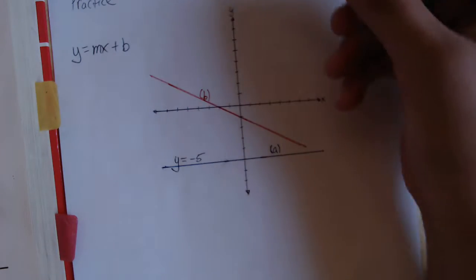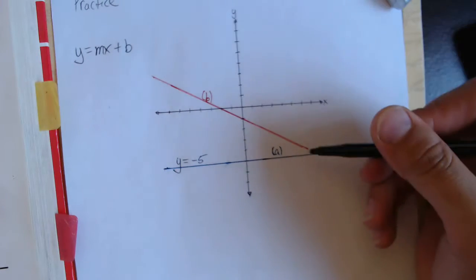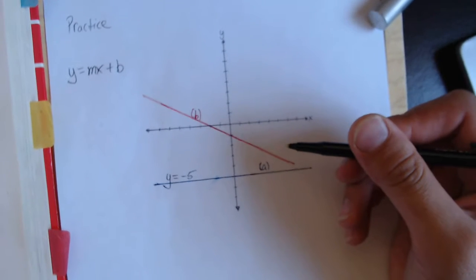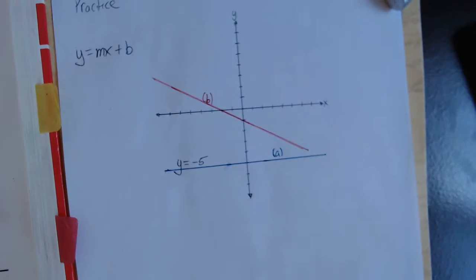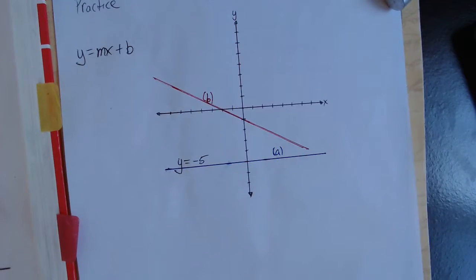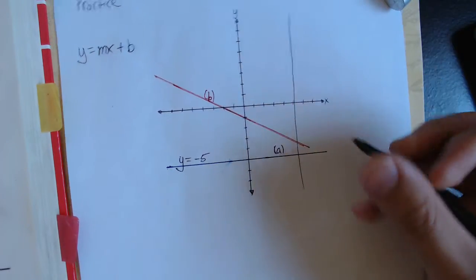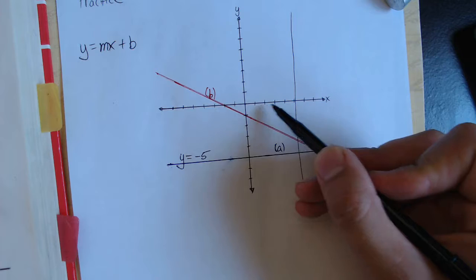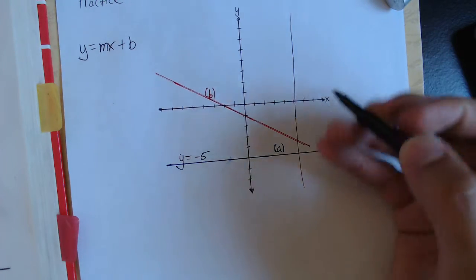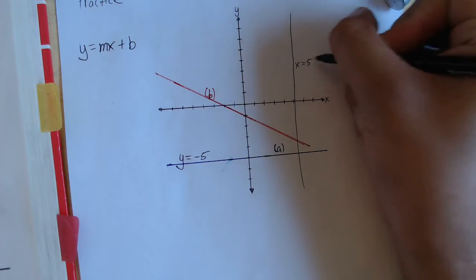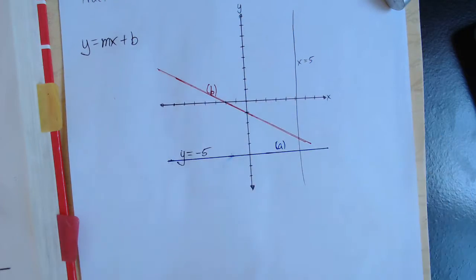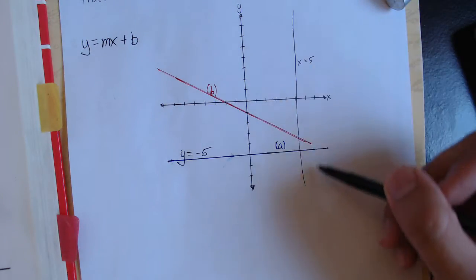Likewise, if we had a perpendicular running this way where it only touched the x-axis, we would just take the value of our x and that would be the equation. So if we had one that ran vertically here at one, two, three, four, five, at positive five, this one would just be x equals positive five because it does not touch the y-axis at all and every value of x is five.